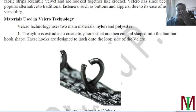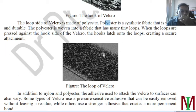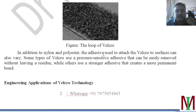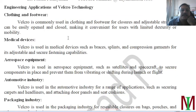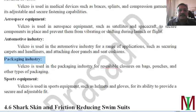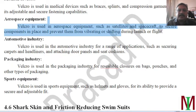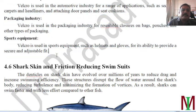Velcro technology uses nylon hooks and polyester loops — nylon for the hook side and polyester for the loop side. Engineering applications of velcro include clothing and footwear, medical devices, aerospace equipment, the automotive industry, packaging industry, and sports equipment.